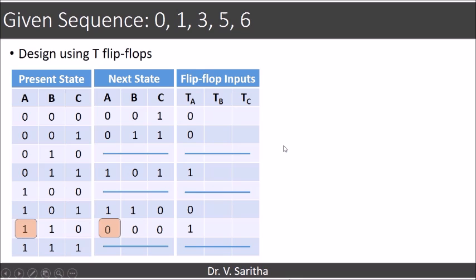And 1, 0 TA is 1. Similarly we can get the values for TB and TC like this.